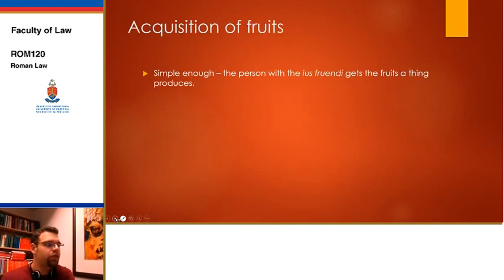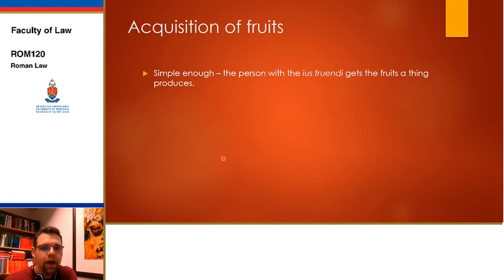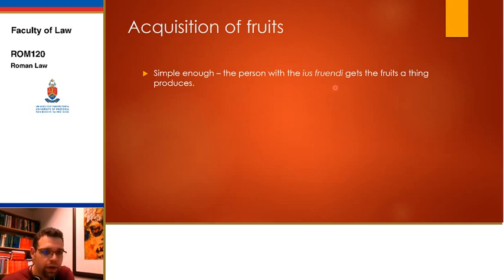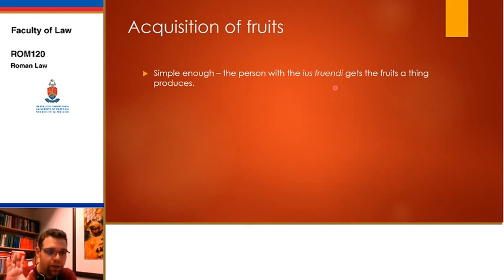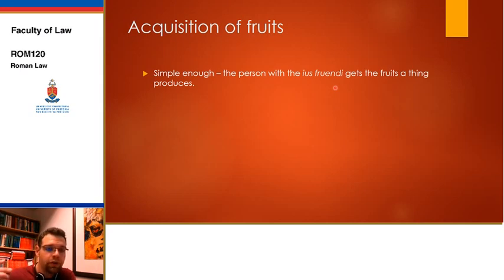Acquisition of fruits: fruits are the property of whoever has the use fruendi — which is generally the owner, but not always. Whoever has the right to take fruits becomes owner of that object's fruits as soon as they are produced.